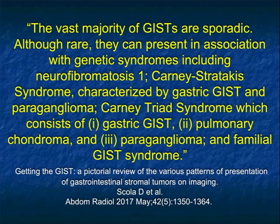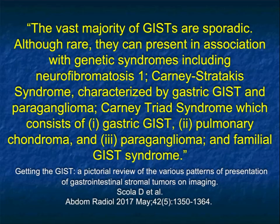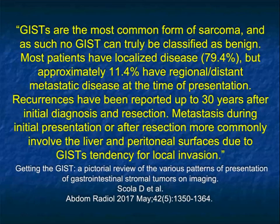The vast majority of GIST tumors are sporadic, but they can occur with certain syndromes: neurofibromatosis 1, Carney-Stratakis syndrome (GIST tumors and paragangliomas), Carney's triad syndrome (GIST tumors, pulmonary chondromas, and paragangliomas), and familial GIST tumors. Those syndromes are really good examples of things you can quiz people on — they may not know the answer.